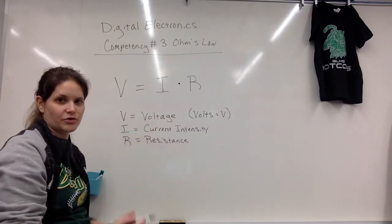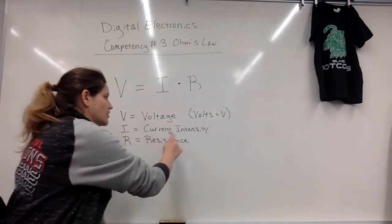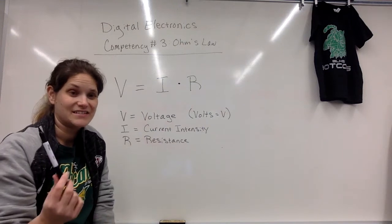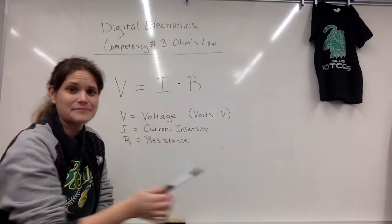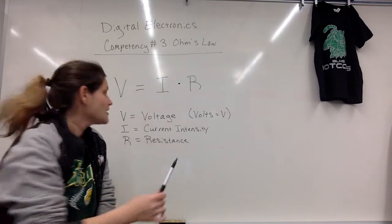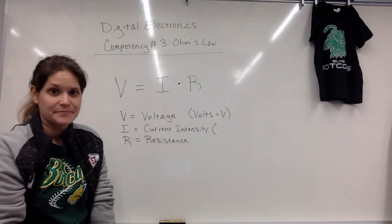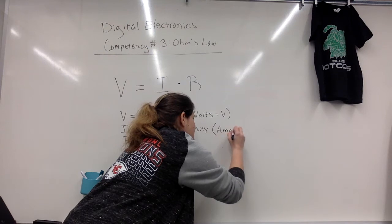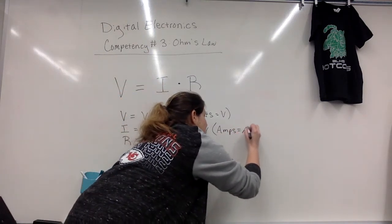Current intensity, or just current. Most of the time you're never going to hear anybody call it current intensity. In fact, I didn't know that it was current intensity until very recently when I decided to Google why the heck is it an I and not a C in this formula. It's current intensity. But that is measured in amps. The full name for it is actually amperes, but you're going to just hear amps. And we do abbreviate that as a capital A.